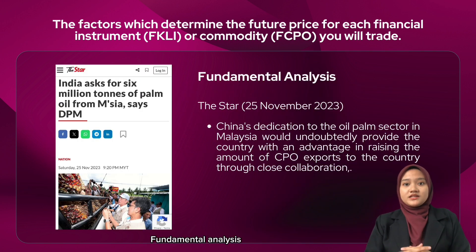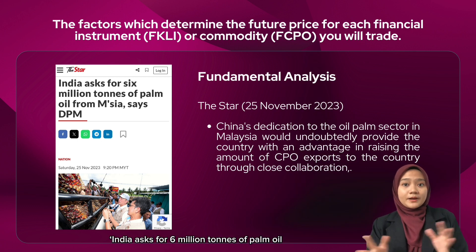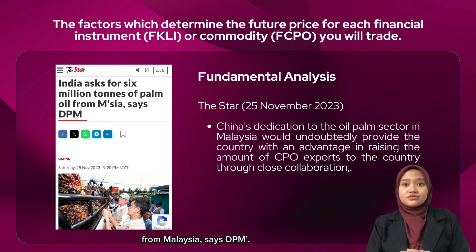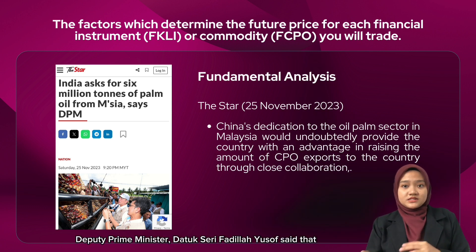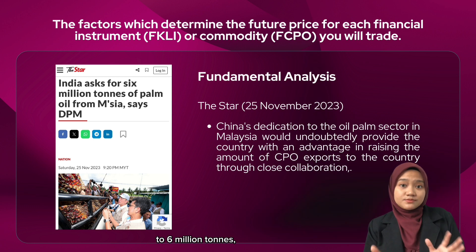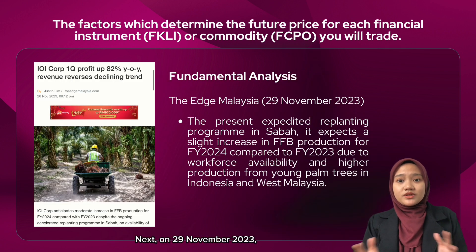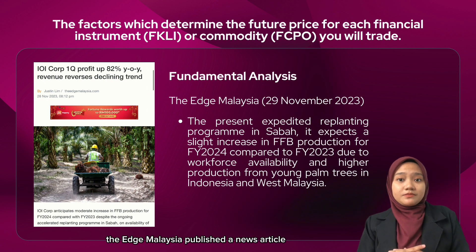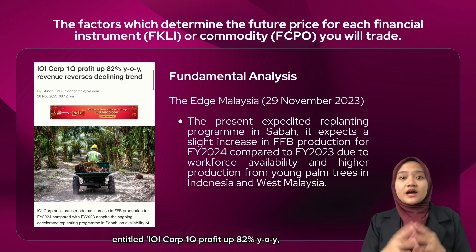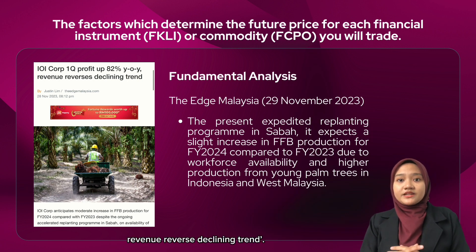For fundamental analysis: on 25 November 2023, The Star published an article entitled 'India Asks for 6 Million Tons of Palm Oil from Malaysia.' Deputy Prime Minister Datuk Seri Fadila Yusuf stated that India's demand for CPO had increased to 6 million tons and the country's CPO exports had been operating well. This news led us to decide to trade in a long position. Next, on 29 November 2023, The Edge Malaysia published an article entitled 'IOI Corp First Quarter Profit Up 82% Year-over-Year, Revenue Reverses Declining Trend.'